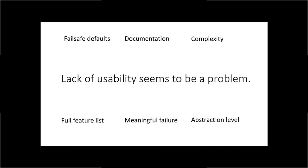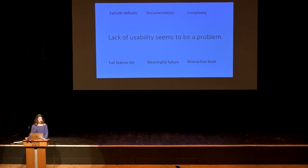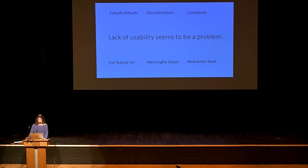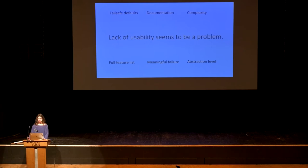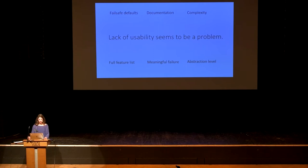Maybe we should simplify APIs. But somewhat contrarily, if you don't offer a full feature list, people might just get frustrated, give up, or use something else entirely. You should also provide meaningful failure — when something does not work, tell people why, and fail in a way that people learn something and can quickly move on, maybe only using your documentation rather than Googling around. And then there's the abstraction level and learnability: how many things do you have to look at before you understand what you need to do to achieve your goal?